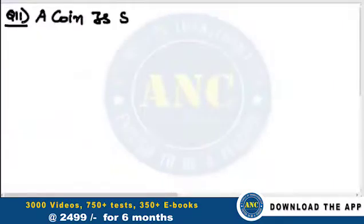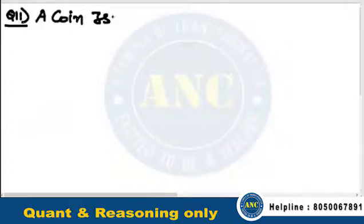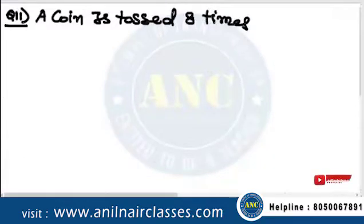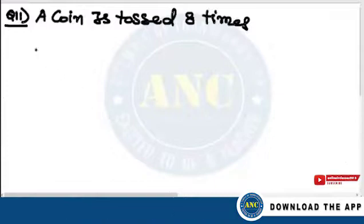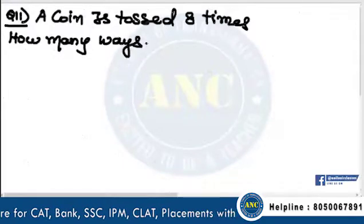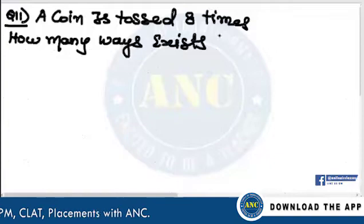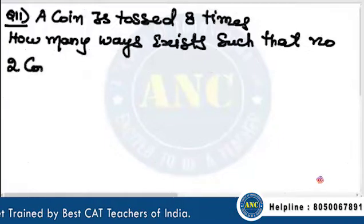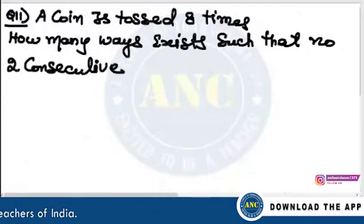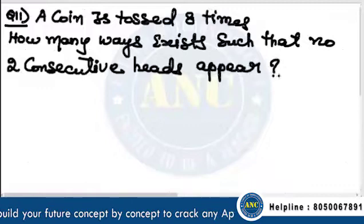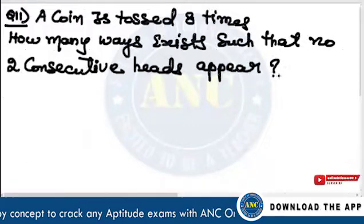Question number 11: A coin is tossed 8 times. How many ways exist such that no two consecutive heads appear?